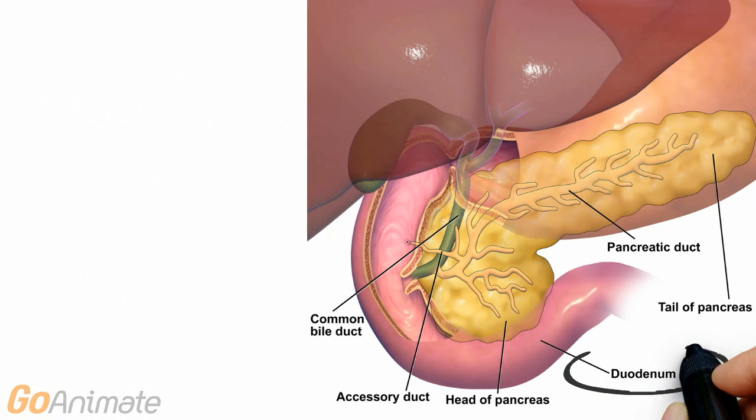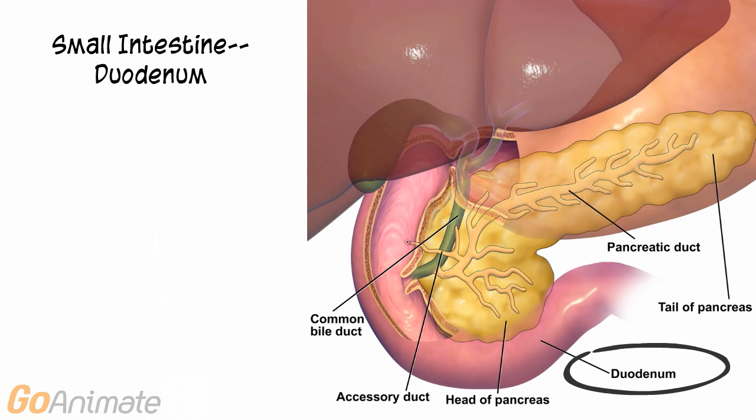The small intestine is built for absorption with a large surface area. Some special structures include plica circularis, which are circular folds that increase the surface area, and villi, which are tiny finger-like projections containing blood vessels and lacteals, which are part of the lymphatic system.